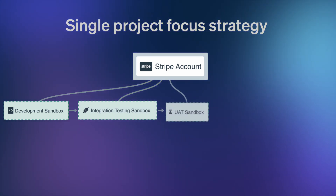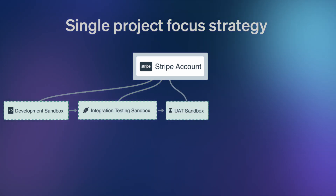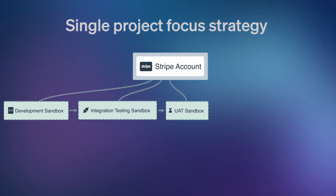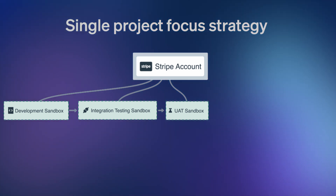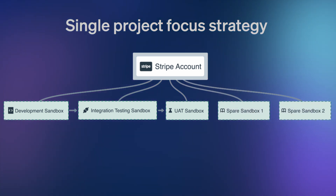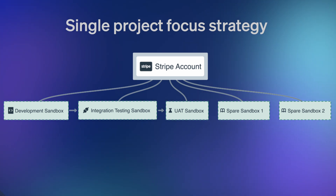After this, there's UAT, or user acceptance testing, where you can validate the product against user requirements. Then you have two spare sandboxes — keep these available for unexpected testing scenarios.